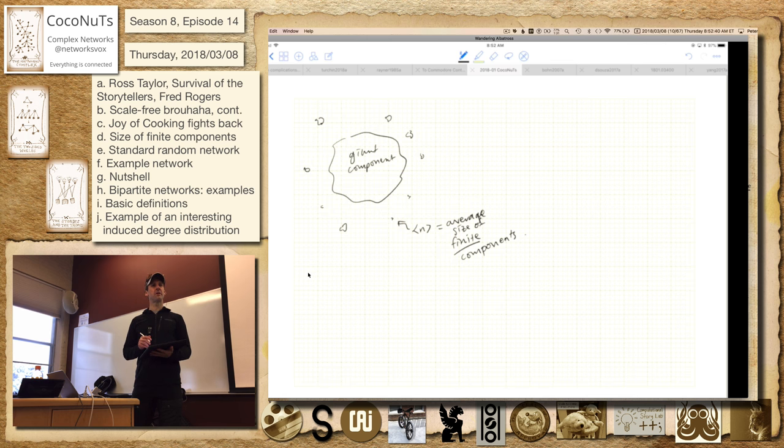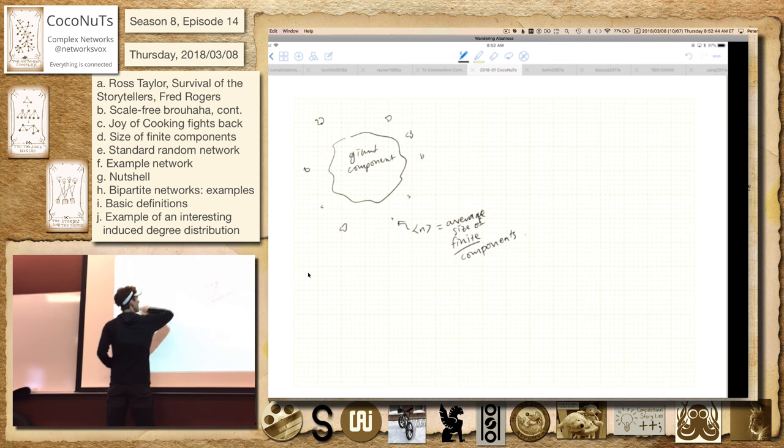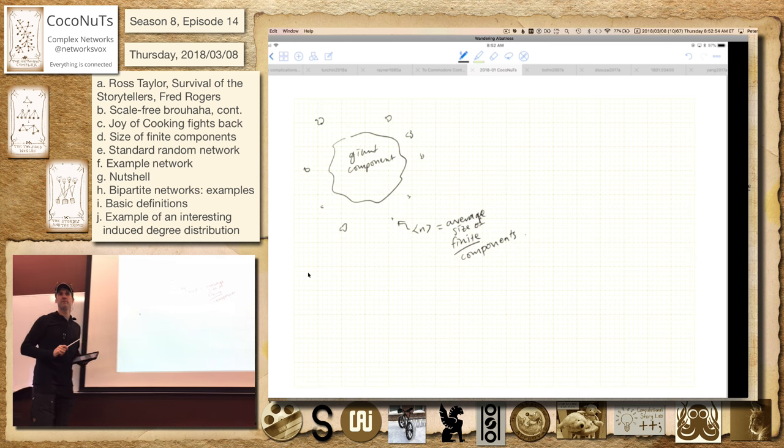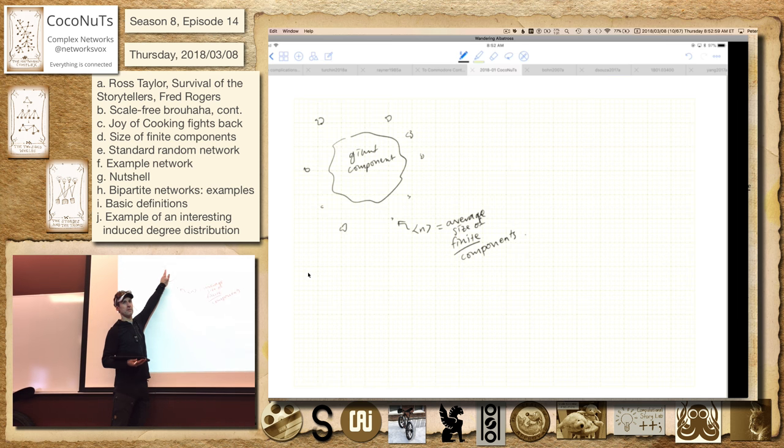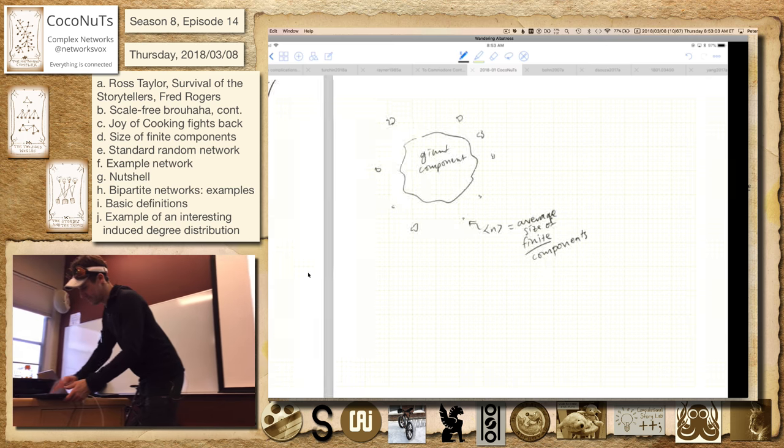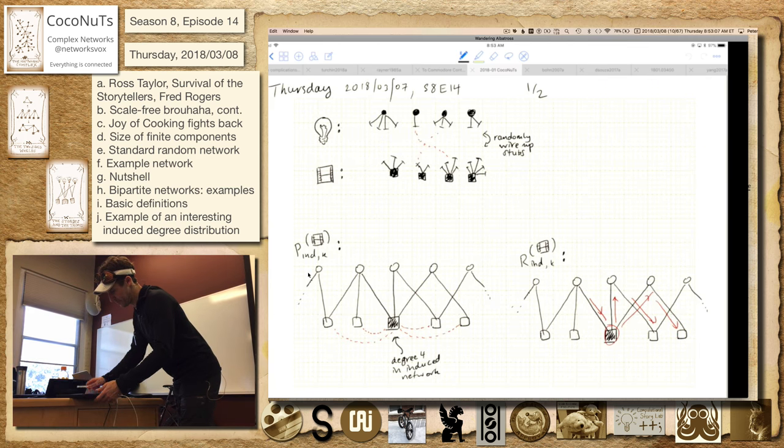This is the thing where we don't have—all our probability things, where we talk about the probability of a component belonging to size, the probability of a node belonging to a component of size n, we're always avoiding this. So if we sum up those probabilities, we get one minus the probability that you're in here.